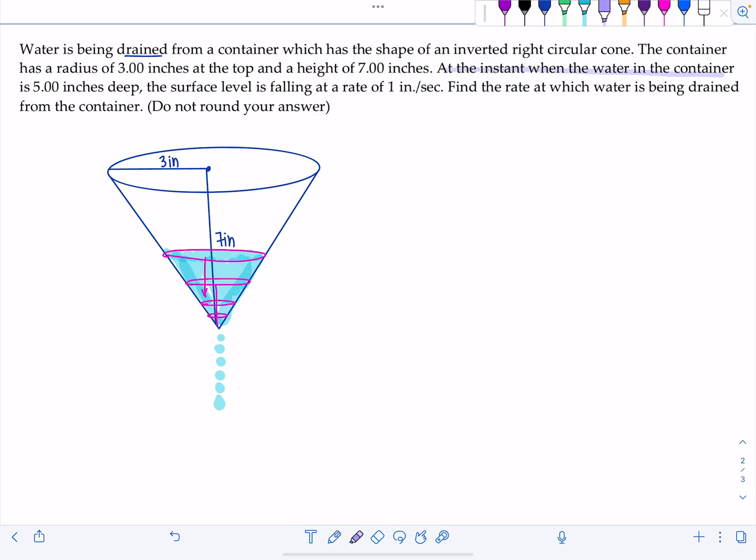At the instant when the water in the container is five inches deep, the surface level is falling at a rate of one inch per second. So what does that mean? Surface level, that's basically the height. So we can say dh/dt, it's falling, so that's a negative one inch per second, when the water is five inches deep, when h is five inches. Find the rate at which the water is being drained from the container. So what they want, water being drained means it's going down. They want dV/dt.